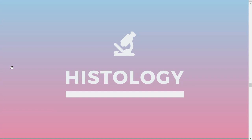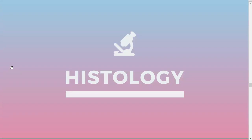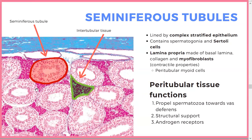Now histology, mixed with a little pathophysiology. On a slide you should recognize the seminiferous tubule because it looks like a brownish tube with a hole. What's in the tubes is inter-tubular tissue. It's lined by complex stratified epithelium containing Sertoli cells. The external lamina propria is made of basal lamina and myofibroblasts — 'myo' meaning muscle, giving it contractile properties.